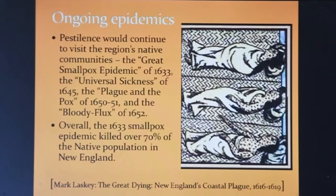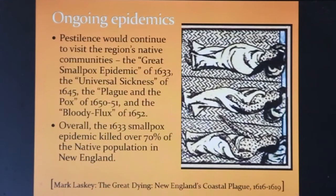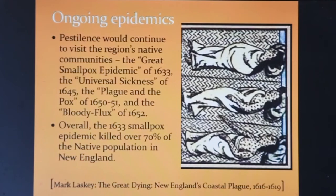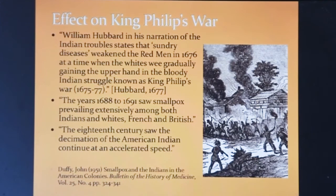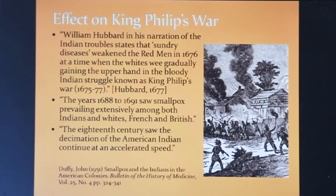The great pestilence continued throughout the region following the 1633 smallpox epidemic: a universal sickness in 1645, the plague and pox of 1650, and the bloody flux of 1652 further weakened the native population. As William Hubbard wrote, sundry diseases weakened the Red Men in 1676 during King Philip's War, and further outbreaks in 1688 to 1691 continued to affect the Indians and whites, French and British. The decimation of the American Indian continued at an accelerated speed throughout the 18th century.